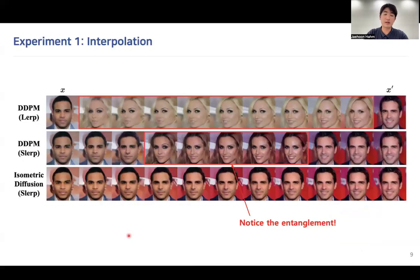The first qualitative experiment we show is interpolation. Our model can achieve better interpolation without the entanglement. For example, when connecting two images of men, using baseline DDPM, there exists unnecessary images of women indicating entanglement, while with our model, we can achieve better smoother transitions.